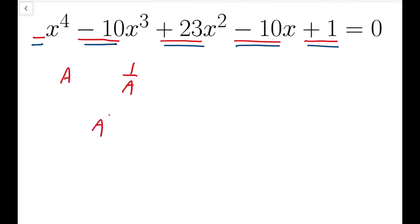If a is a solution, then I can say that a to the 4 minus 10 times a cubed plus 23 a squared minus 10a plus 1 equals 0.